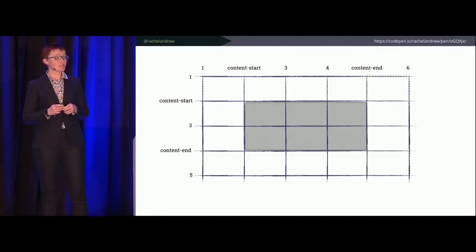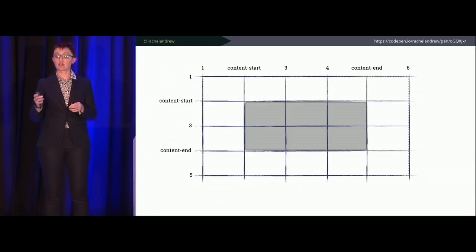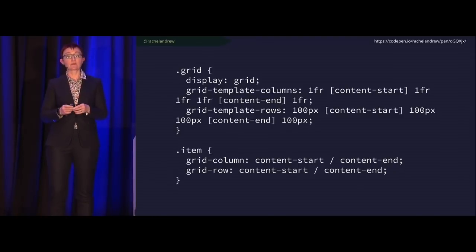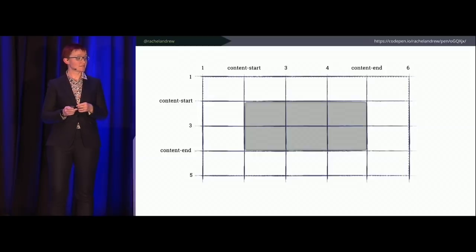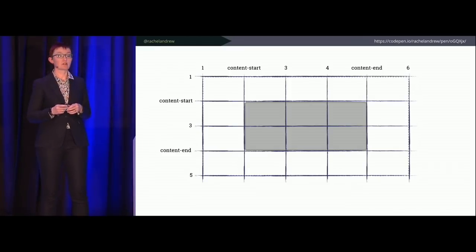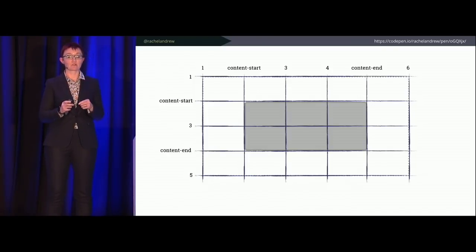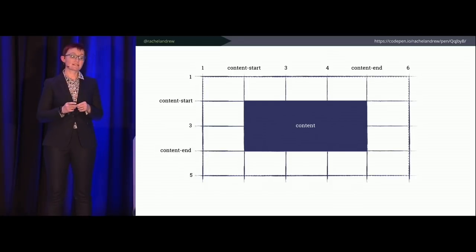We can name lines — I'll name them `content-start` and `content-end` for both rows and columns, placing them within square brackets in the definition. Then we swap the numbers for names when placing the item. This gets interesting: if you use the dash-start and dash-end naming convention, you get a named area of the main name used. So with `content-start` and `content-end` for both rows and columns, you can use the `grid-area` property to place the item.